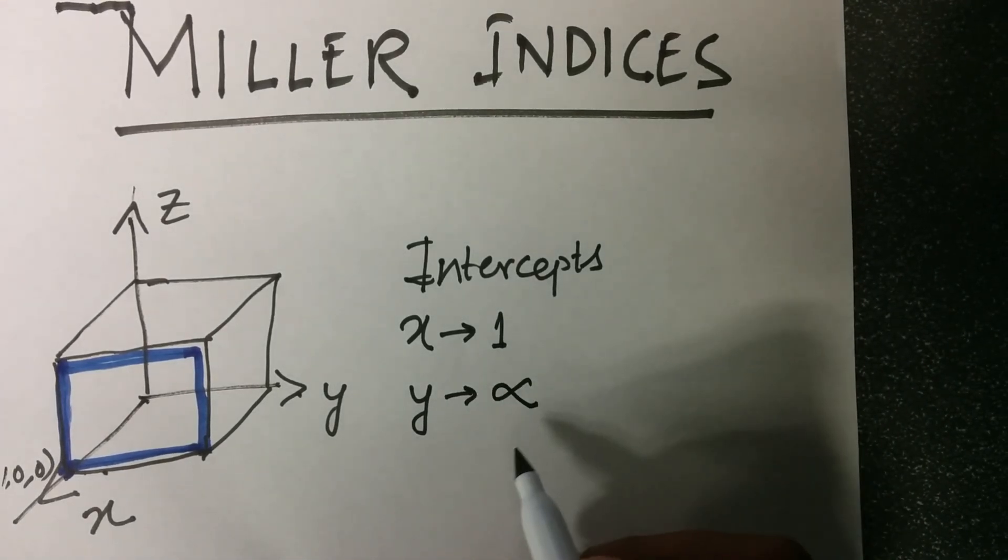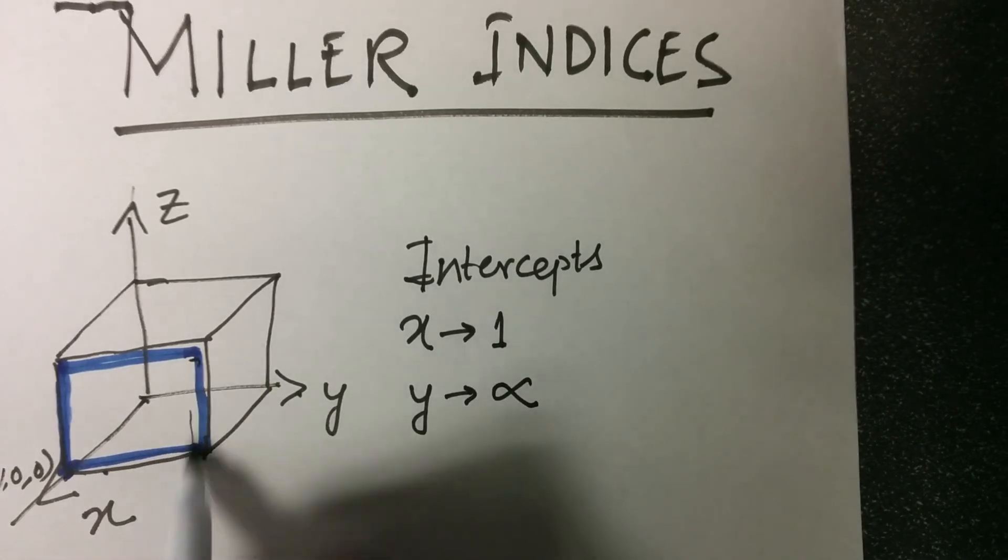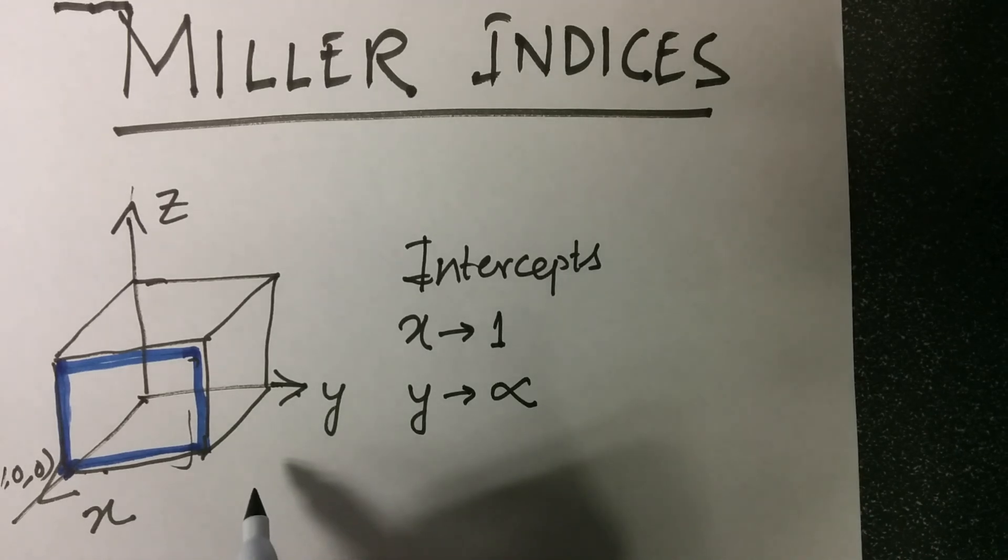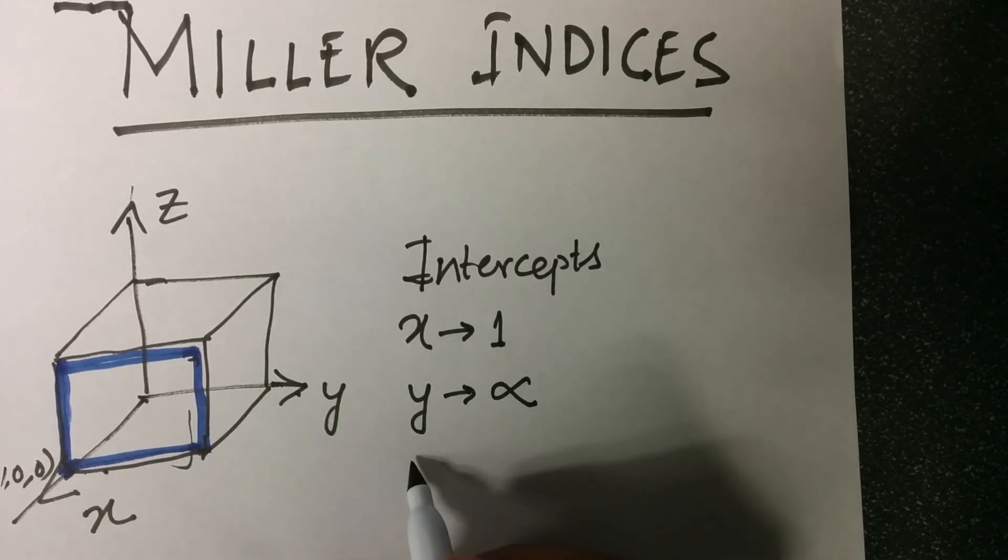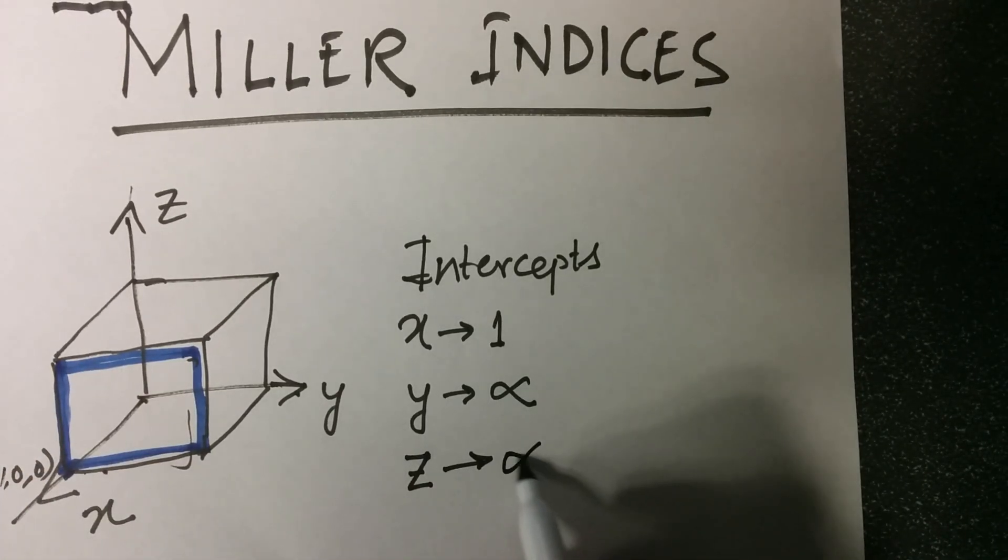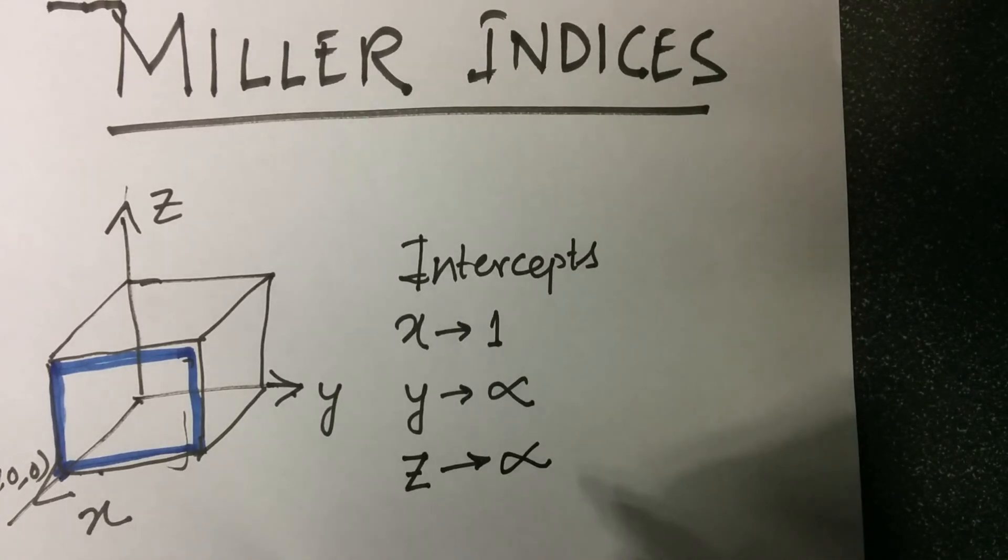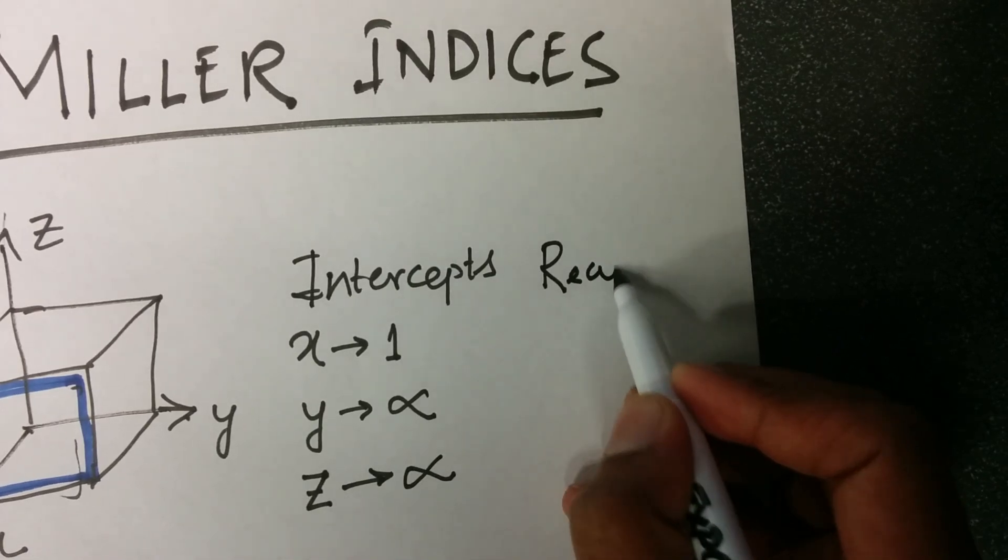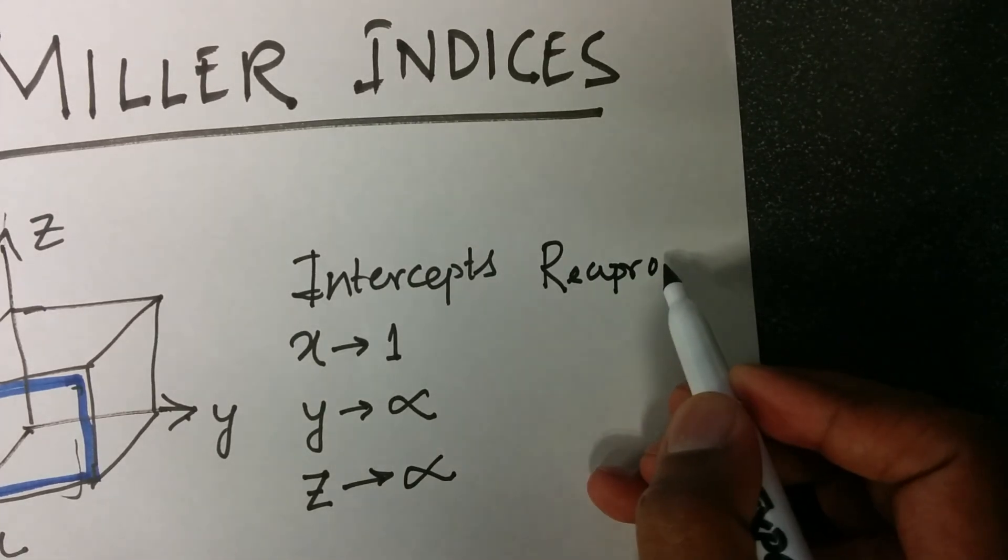The reason is because this plane is parallel to y-axis, it does not intersect at all. Similarly, the plane is parallel to z-axis, so the intercept is infinity. Next, we take reciprocal of the planes or the intercepts.